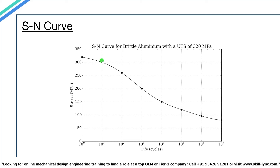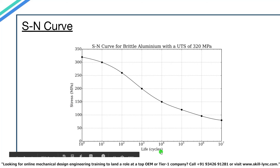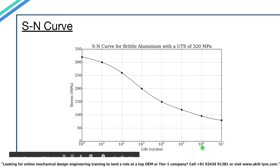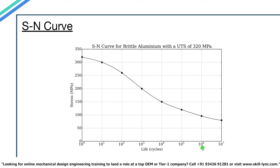Here we have the SN curve for brittle aluminium. On the Y-axis we have stress in megapascals and on the X-axis we have life cycles. If aluminium is subjected to 300 MPa of stress, the material will fail under fatigue with just 10 life cycles. At around 100 MPa, it will fail at around 10 to the power of 6 — about 1 million life cycles. This curve lets us calculate the number of load cycles a material can experience before failure for a given stress range. Fortunately, this data is published in material handbooks and is available online.